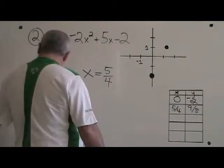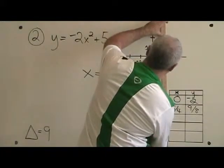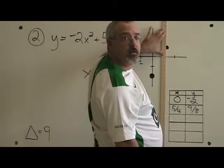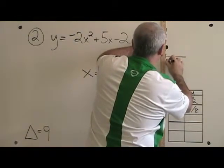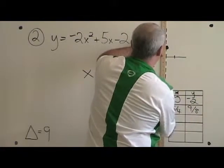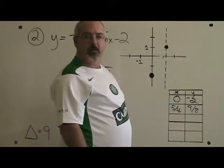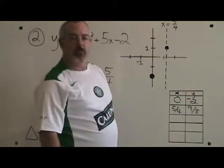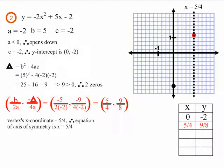Now we're going to draw it on the graph. The equation of the axis of symmetry is always a vertical line that goes up and down through the vertex, and we always draw that line with a dotted line. We make sure to label the equation of the axis of symmetry on the graph. Write x equals 5 fourths — don't just write 5 fourths. Make sure you put x equals 5 fourths because an equation has to have an equal sign.